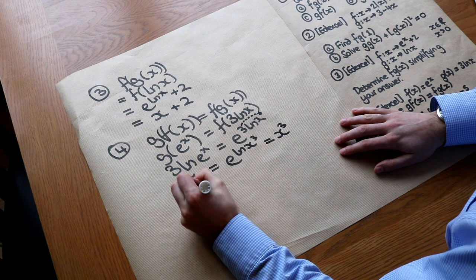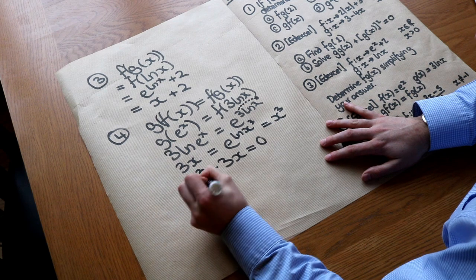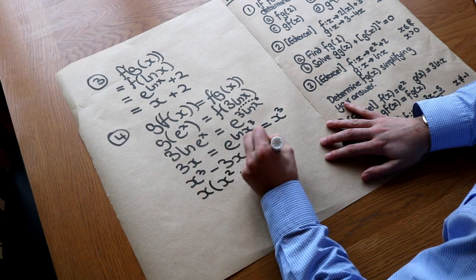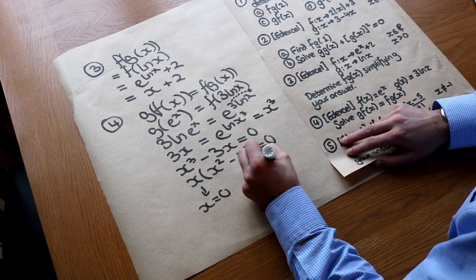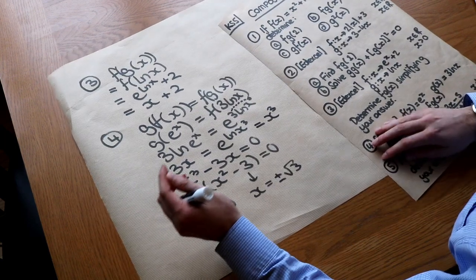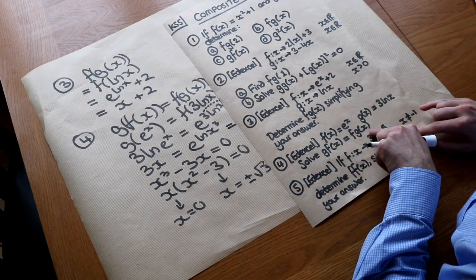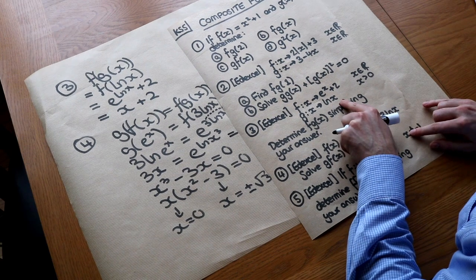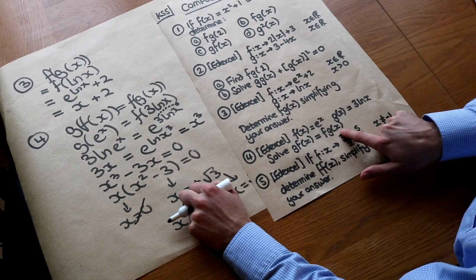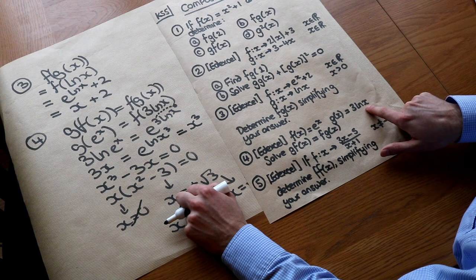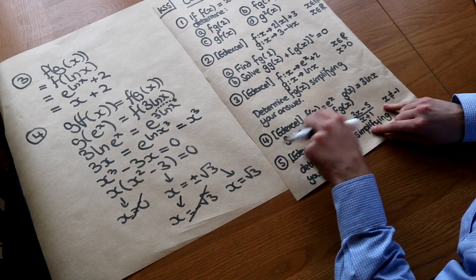So x³ − 3x = 0, factorising: x(x² − 3) = 0, giving x = 0 or x = ±√3. However x = 0 is invalid because ln(0) is undefined in f(g(x)). And x = −√3 is invalid because we cannot take ln of a negative value. So the only valid solution is x = √3.